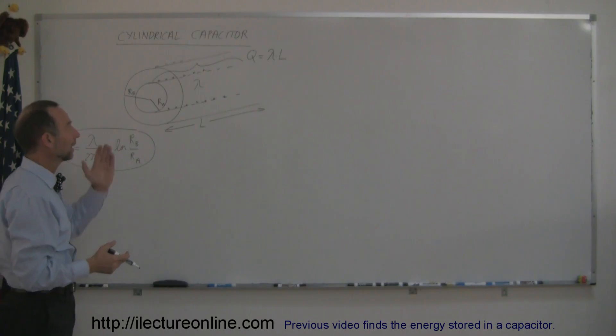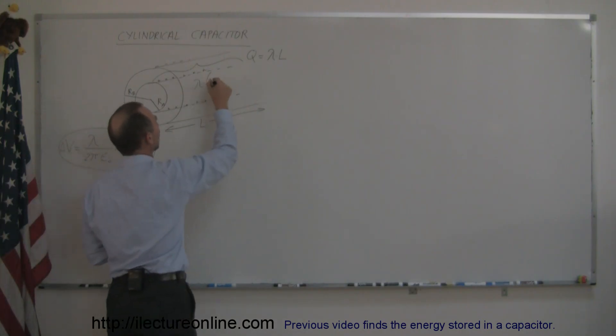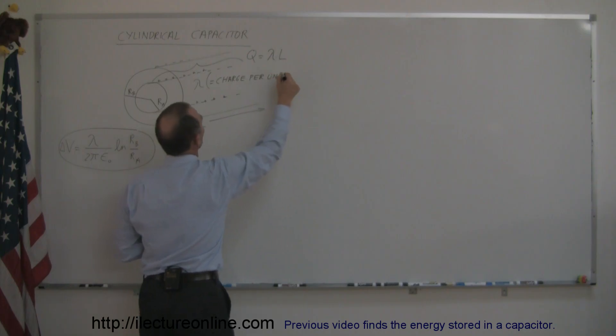And lambda just simply represents the charge per unit length. So we'll write that down, this is the charge per unit length. That makes it a little bit easier to grasp.